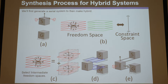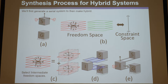It's basically our flexure coupling freedom space — we want to pass the moment through but have everything else be compliant. So we're just going to do a case study here. So what's the first step? You find the freedom space. Its freedom space is this. And then you find its constraint space — its constraint space is that.